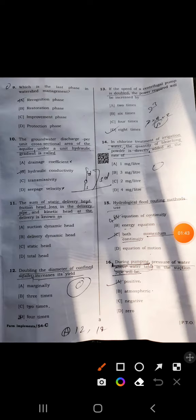Ninth: which is the last phase in watershed management? The answer should be C is correct, improvement phase here.